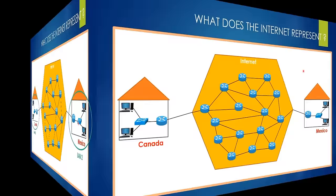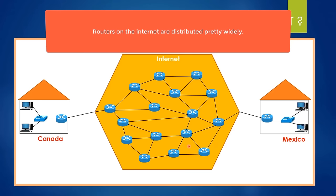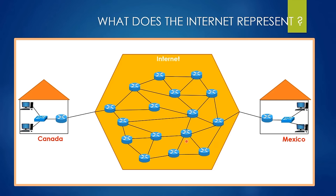Why are there so many routers here? These routers are distributed around the world in an organized manner. However, routers aren't the only devices in the structure — there are tons of routers and other different devices distributed pretty widely. Focusing on routers is enough for us to understand the concept behind the internet. The first question that comes to mind is probably why routers are so important to the internet.